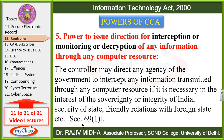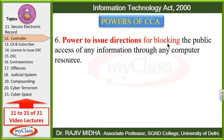This is given in Section 69, Subsection 1. Controller may direct any agency of the government — controller kisi bhi government agency ko — kisi bhi computer resource se koi information ja rahi hai, usko rokne ke liye kah sakta hai — agar yeh zaroori hai in the interest of the sovereignty, hamaari country ki independence ke liye, country ki integrity aur akhандata ke liye, ya country ki security ko khatra ho sakta hai, ya hamare foreign countries ke saath relations yeh information kharaab kar sakti hai — to controller us particular information ko intercept — rokne ke liye — kisi bhi government agency ko kah sakta hai.